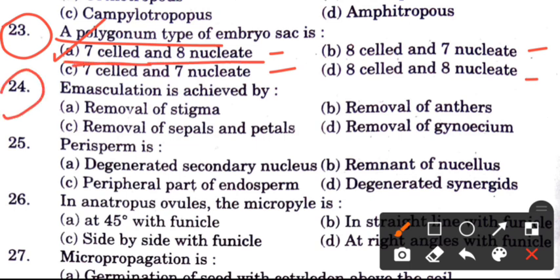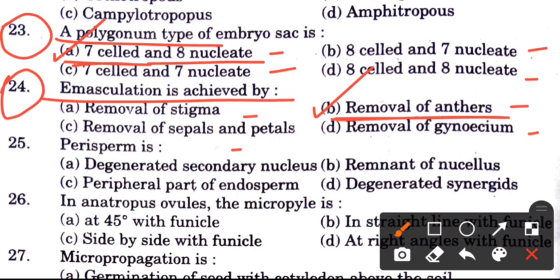Question 24: Emasculation is achieved by — removal of stigma, removal of anthers, removal of sepals and petals, or removal of gynoecium. The answer is B, removal of anthers. Emasculation is the process in which stamens are removed so that self-pollination cannot occur.